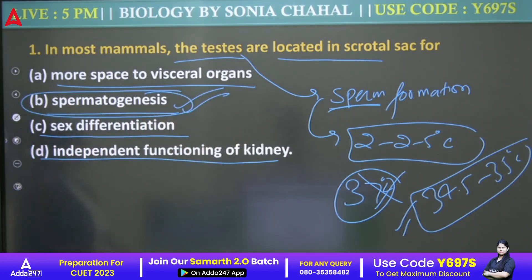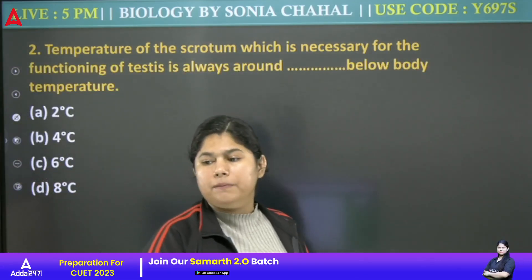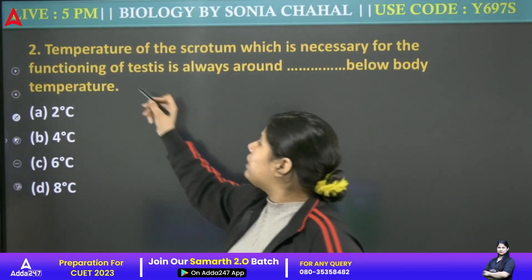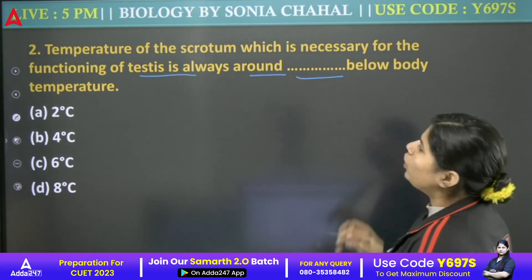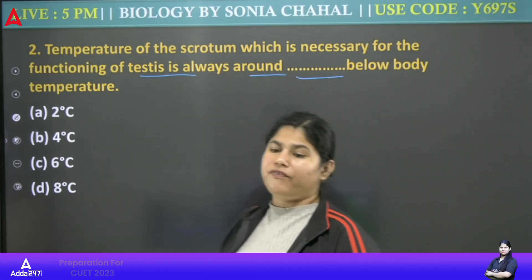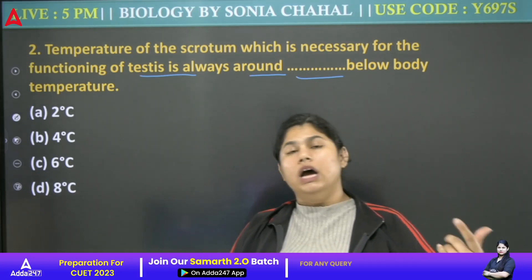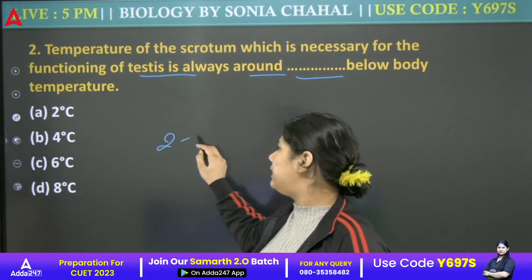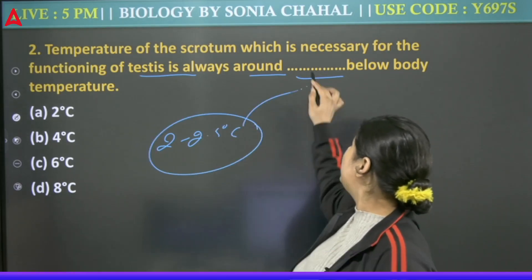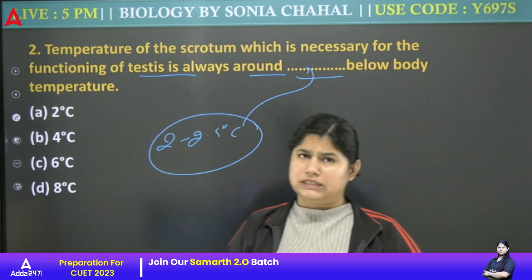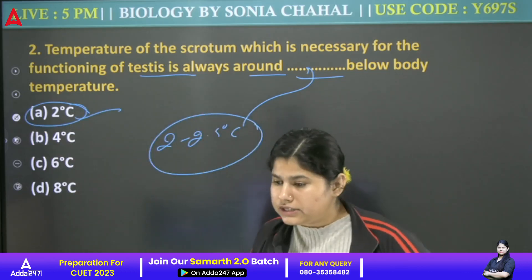Next question: The temperature of the scrotal sac, which is necessary for the functioning of testes, is always around how many degrees Celsius below body temperature? Options: 2 degrees, 4 degrees, 6 degrees, and 8 degrees Celsius. I told you it is 2.5 degrees Celsius below body temperature, so the answer will be 2 degrees Celsius. No doubt — 2 degrees Celsius.